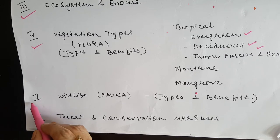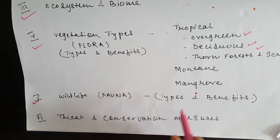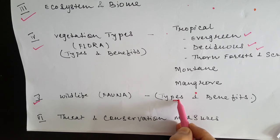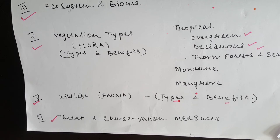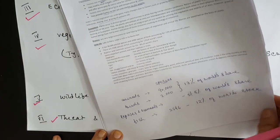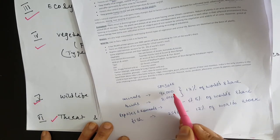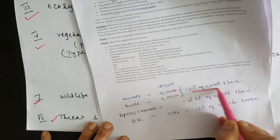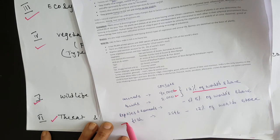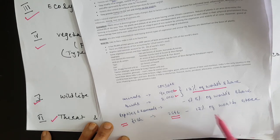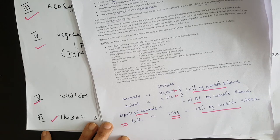Now let us take up the wildlife or fauna of India — the various types of wildlife and how they enrich our life, followed by the threats and conservation measures. Like flora, India is rich in its fauna as well. There are about 90,000 species of animals and 2,000 species of birds, accounting for 13 percent of the total world's share. India can boast of 2,546 species of fish, accounting for 12 percent of the total world's stock. Reptiles and mammals account for 5 to 8 percent of the total world's share.